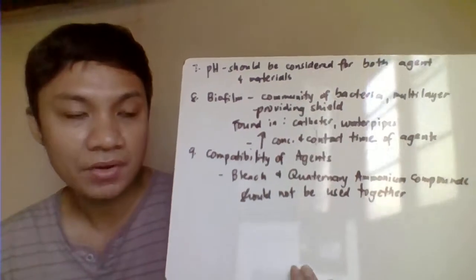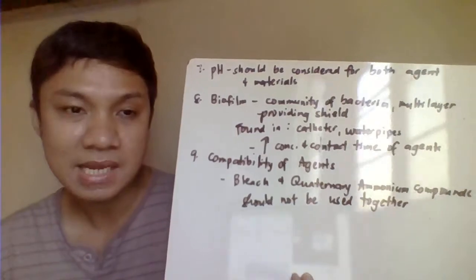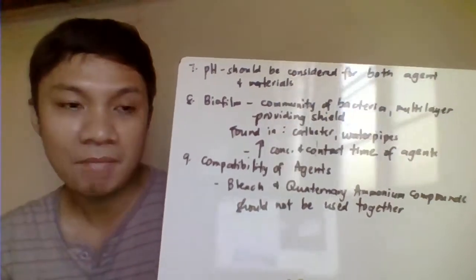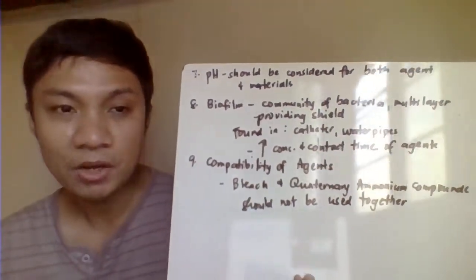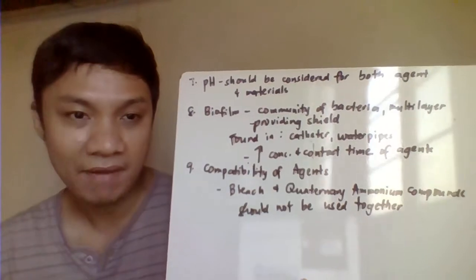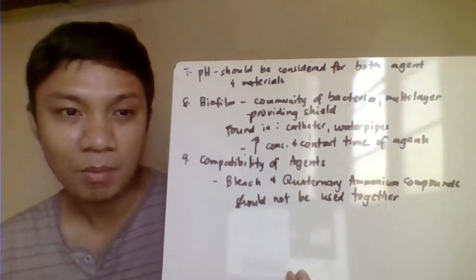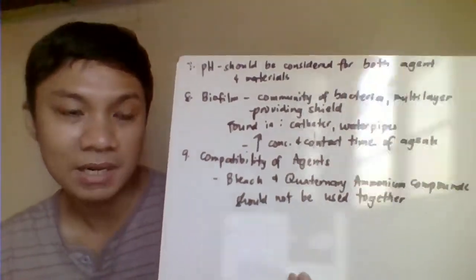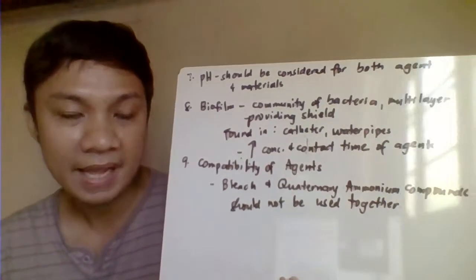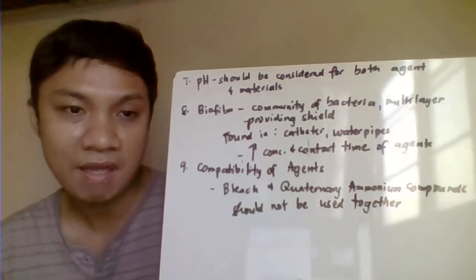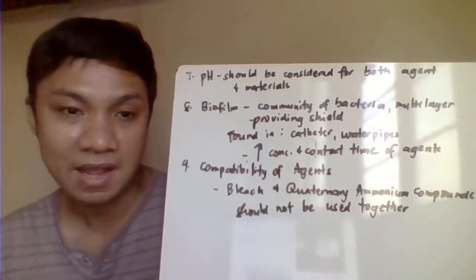Compatibility of agents is also important. Not all combinations of agents produce a greater effect — some combinations negate each other's activity, reducing effectiveness. For example, bleach (sodium hypochlorite) and quaternary ammonium compounds should never be combined, as they will lose their sterilizing or disinfecting ability.